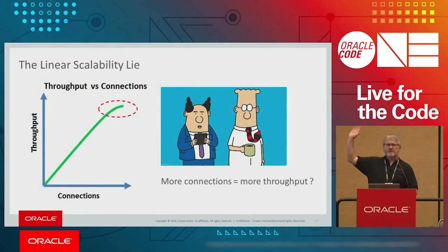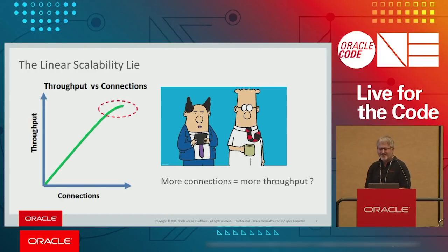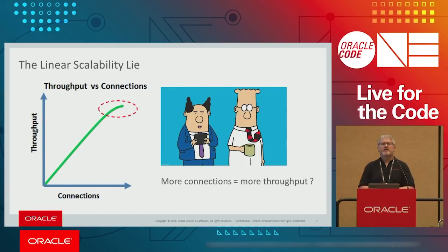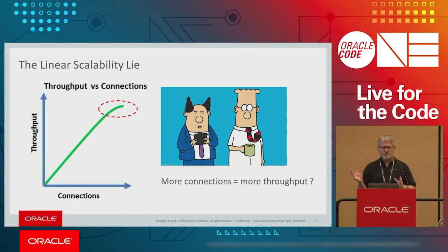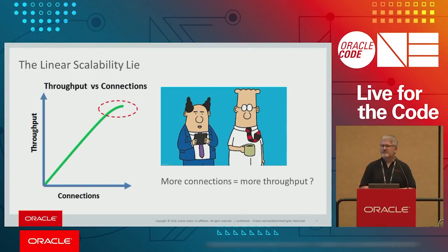How many of you recognize these guys? The guy on the right, Dilbert — he knows how things work, he knows life is complicated and it's not so simple. The guy on the left, the pointy-headed boss, doesn't care how things work. So what we're going to talk about first is this linear scalability lie. The pointy-headed boss would say you must have linear scalability. Dilbert's going to say it's actually more complicated than that.